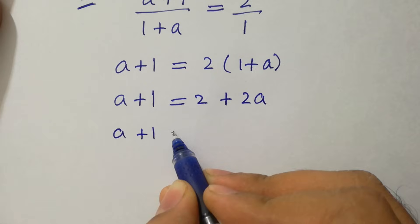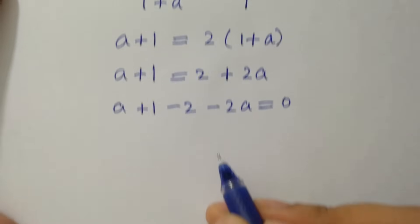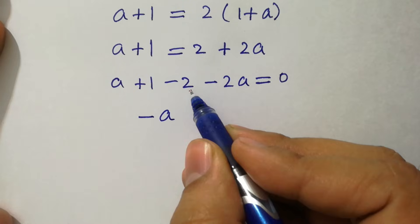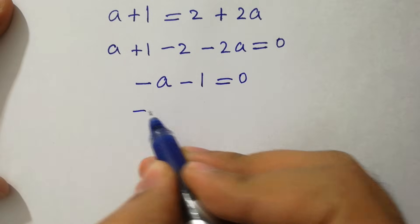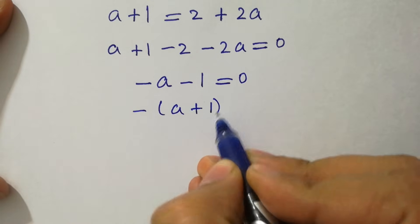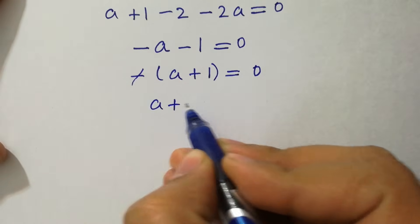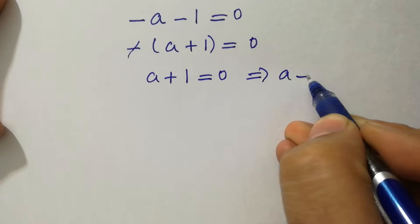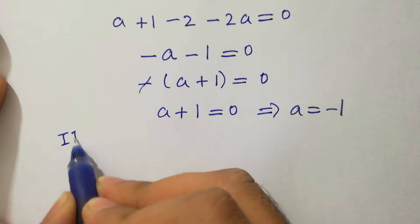Rearranging, we bring terms to one side: a - 2a + 1 - 2 = 0, giving us -a - 1 = 0. Multiplying both sides by -1 we have a + 1 = 0, so the value of a is equal to -1.